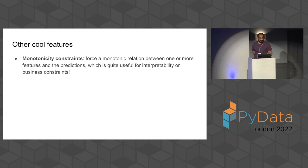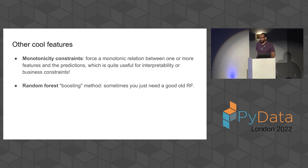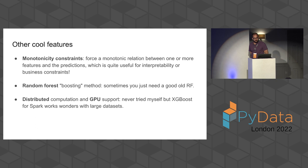There are other cool features I haven't even covered. First, you can add monotonicity constraints — you can force the relationship between a feature and the prediction to be monotonic. This is quite niche but useful for more interpretable models or when business constraints require it. You can also use a random forest boosting method — if you need extra robustness, you can build the trees in parallel rather than iteratively, while still gaining all the advantages like missing value handling and categorical encoding. Finally, you can use distributed computation and GPU support. I've used XGBoost on Spark, which was so much better than using the Spark machine learning library.